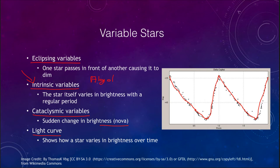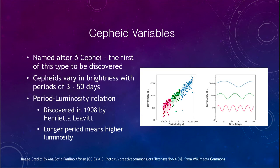Let's look a little bit more at these Cepheid variables. They got their name from the first one that was seen, which was Delta Cephei — the fourth brightest star essentially in the constellation of Cepheus in the northern sky. They can vary in brightness with periods of between about three and fifty days.